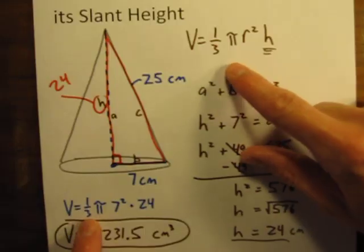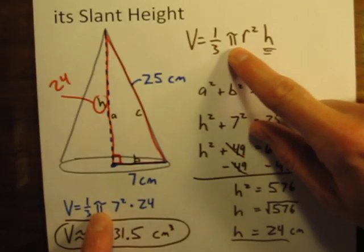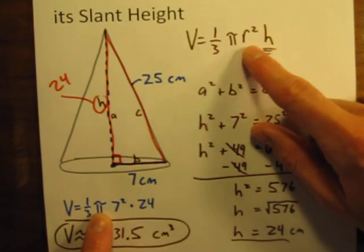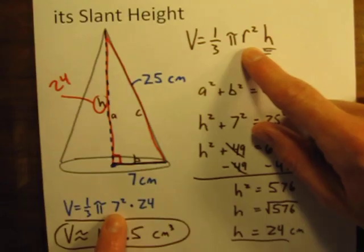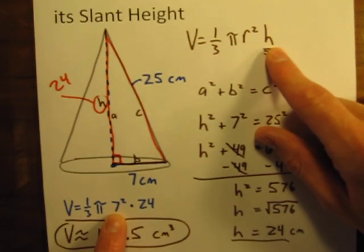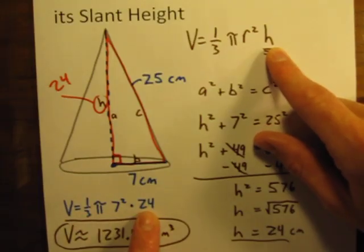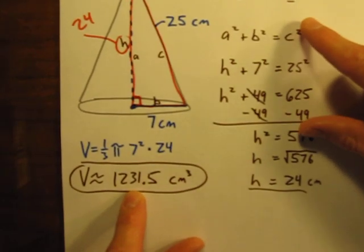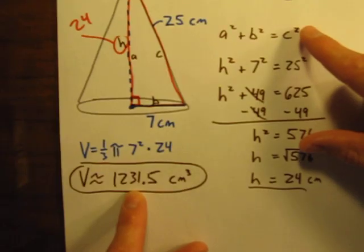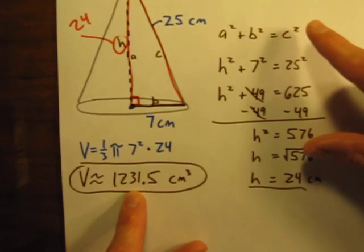Then, that is the number that we can plug into our formula. So the volume is equal to one third times pi times the radius squared, which is 7 squared, times the actual height, not the slant height, which was 24. Punch all those into our calculator, and we end up with an answer of approximately 1,231.5.